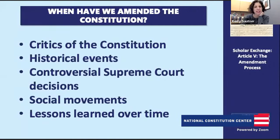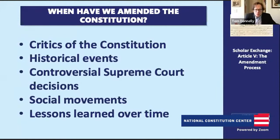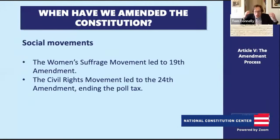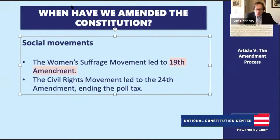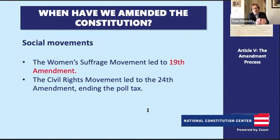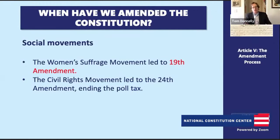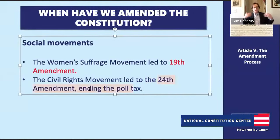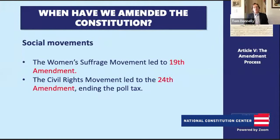Another big grouping is social movements. When have we seen social movements take so much traction that they get amendments into the Constitution? A famous example is the women's suffrage movement and the 19th Amendment granting women the right to vote — that grew out of decades and decades of social movement activism. We also see reform happening at the state level over time, with women's voting out west well before the ratification of the 19th Amendment. Another key example is the civil rights movement, pushing to end Jim Crow and discrimination, which in part led to the ratification of the 24th Amendment, which ended poll taxes in federal elections.